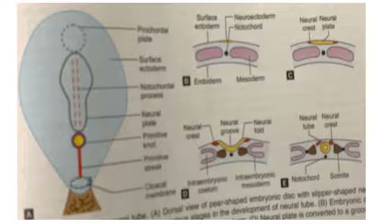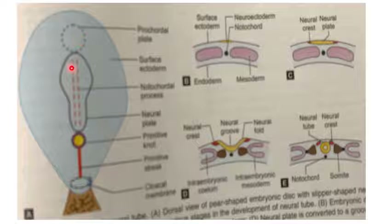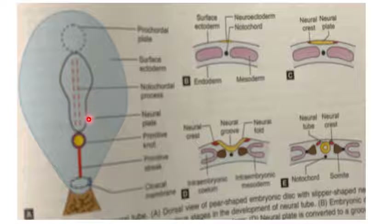Today's lecture is on the development of the central nervous system. The CNS is derived from the neural tube, which is derived from the neural groove, which is derived from the neural plate. This neural plate is derived from the surface ectoderm cells overlying the notochordal process. The pear-shaped embryo shows the pro-chordal plate, and the slipper-shaped neural plate is derived from the surface ectoderm, beneath which lies the notochordal process.